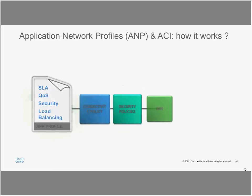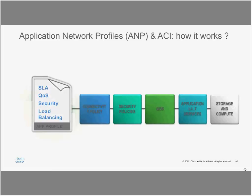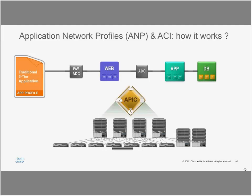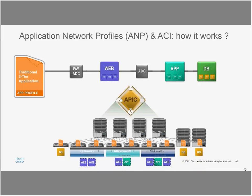Your application profile bundles all your policies — QoS, Layer 4 to Layer 7 services, storage, and compute. The APIC controller, with spine and leaf switches and underlying hosts, takes a defined policy and populates all switches and leaves with that application profile. No matter where your web, app, and database VMs are sitting, whenever traffic goes back and forth, the application profile is on every leaf and spine, ensuring consistent conditioning. Even if a VM moves via vMotion, the same conditioning and policies apply.